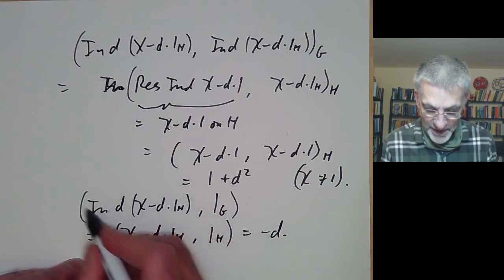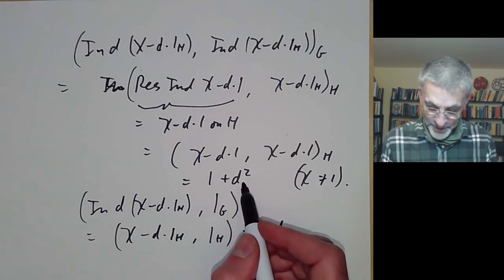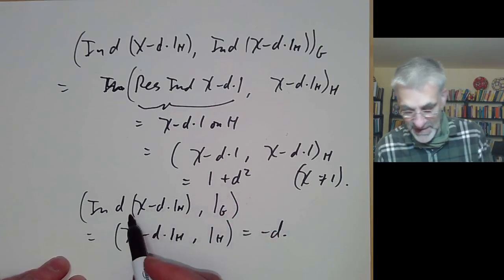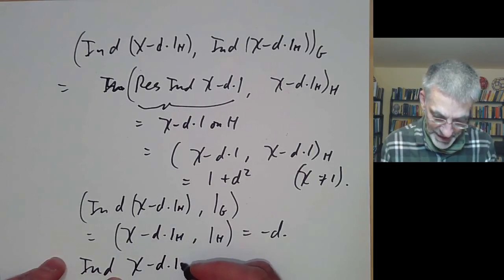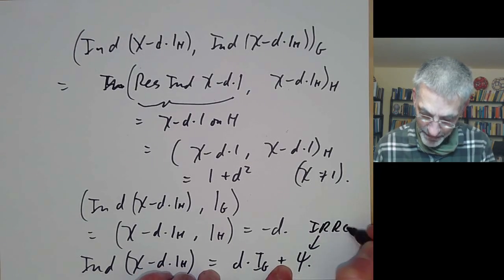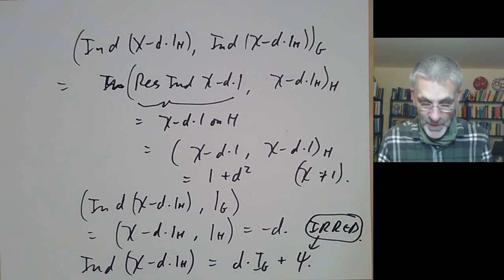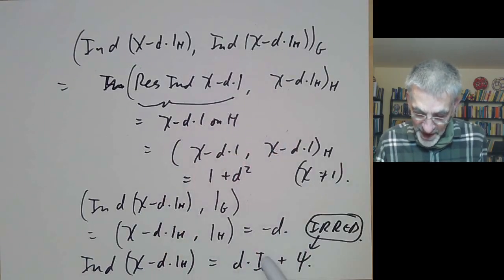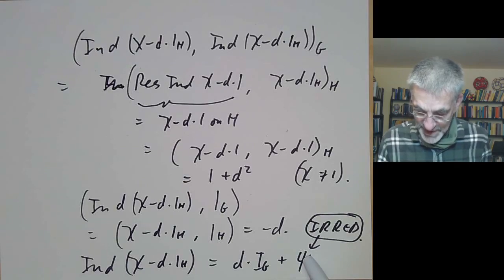So looking at this induced character: it contains −D copies of the identity character and its norm squared is D² + 1. The D² is accounted for by the D copies of the identity character, so the leftover 1 means there must be exactly one other irreducible character. In other words, ind(χ − D·1_H) = D·1_G + ψ where ψ is irreducible — with a minus sign. So we have a way to go from irreducible characters of H to irreducible characters of G.